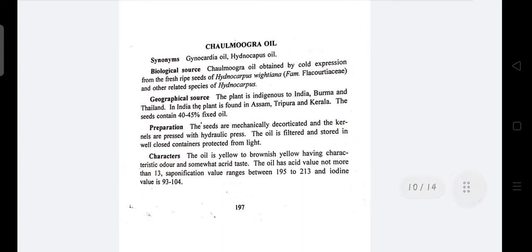Chaulmoogra oil, synonyms: gynocardia oil and hydnocarpus oil. Biological source: it is obtained by cold expression from the fresh ripe seeds of Hydnocarpus wightiana, family Flacourtiaceae. Geographical sources: found in India, Burma, Thailand, Assam, Tripura, and Kerala.